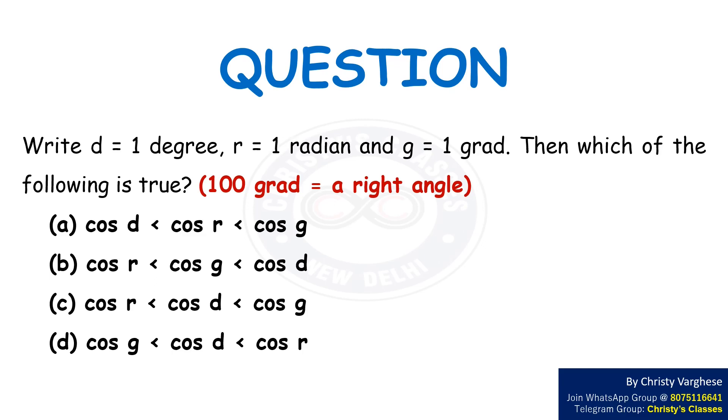Option A: cos d less than cos r less than cos g. B: cos r less than cos g less than cos d. C: cos r less than cos d less than cos g. D: cos g less than cos d less than cos r.